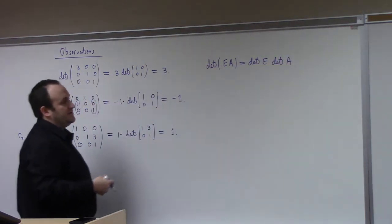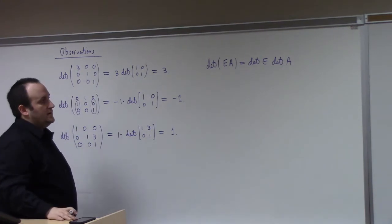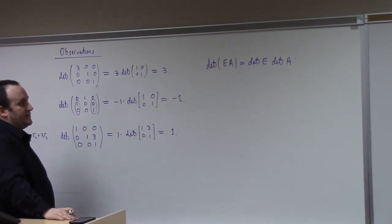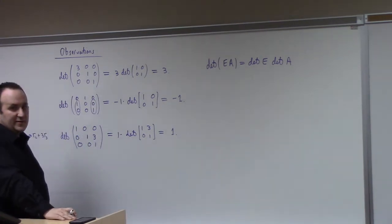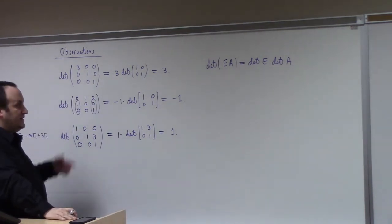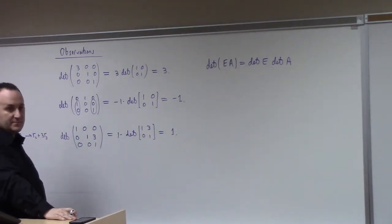If we do row operations on a matrix, we're going to modify the determinant according to these three rules, because det(EA) = det(E) times det(A) by the product rule.